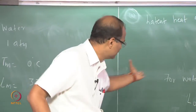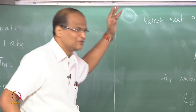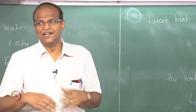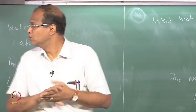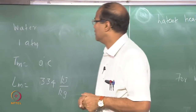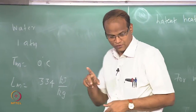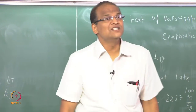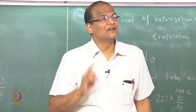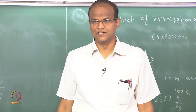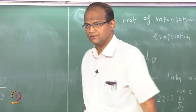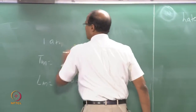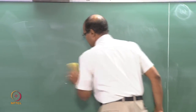The other rule of thumb is also: Tw equals T plus Td divided by 2. Now, let us look at what is 1 ton of refrigeration — that is an important quantity we need to know.